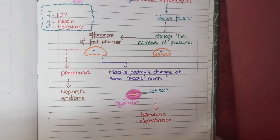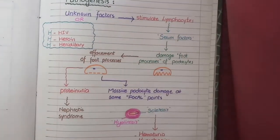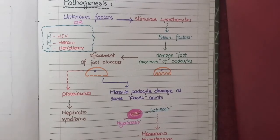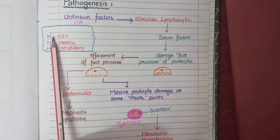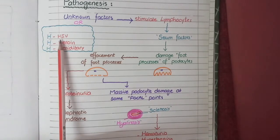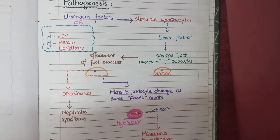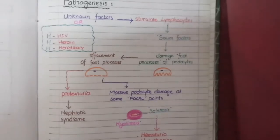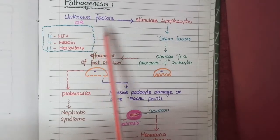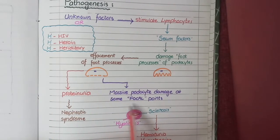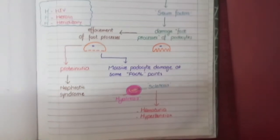An additional point: some cases of focal segmental glomerulosclerosis are not idiopathic but occur secondary to other causes, remembered by the mnemonic 'triple H': HIV, heroin, and hereditary. To review the pathogenesis: unknown or secondary factors stimulate lymphocytes to release serum factors, which damage foot processes of podocytes leading to proteinuria and deposition of hyaline material around glomerular capillaries, causing glomerulosclerosis.